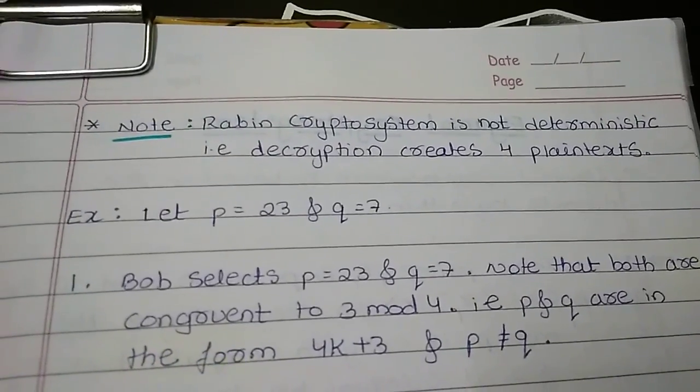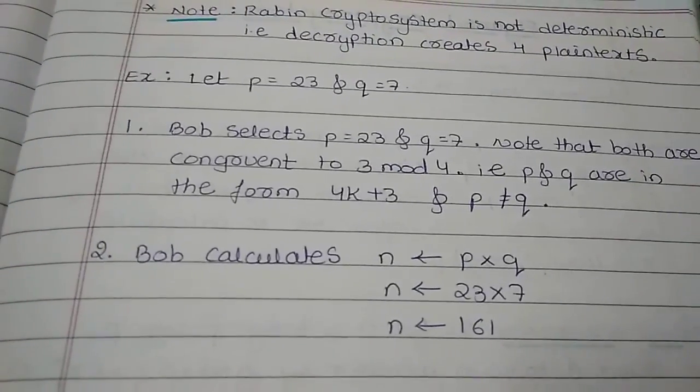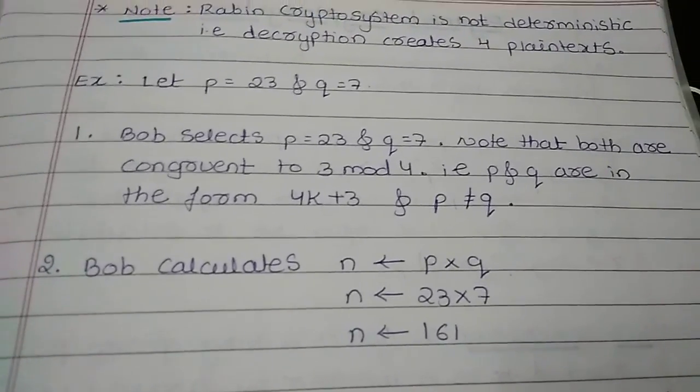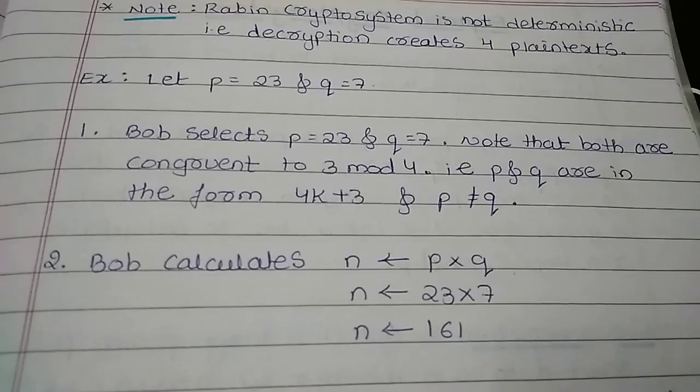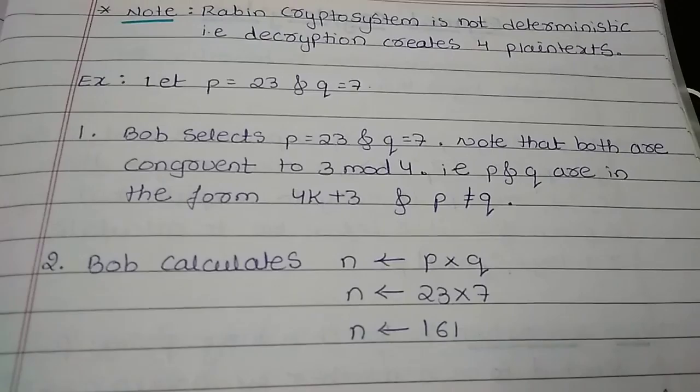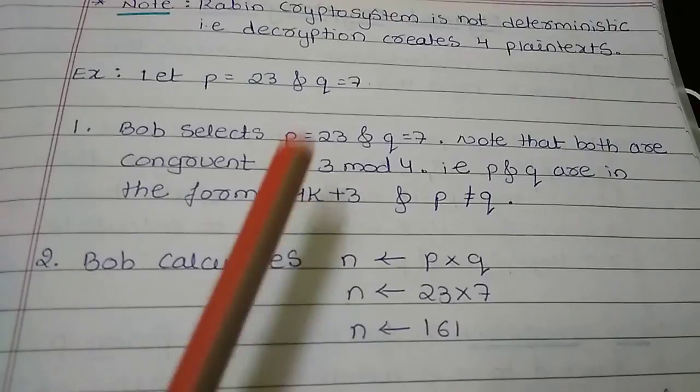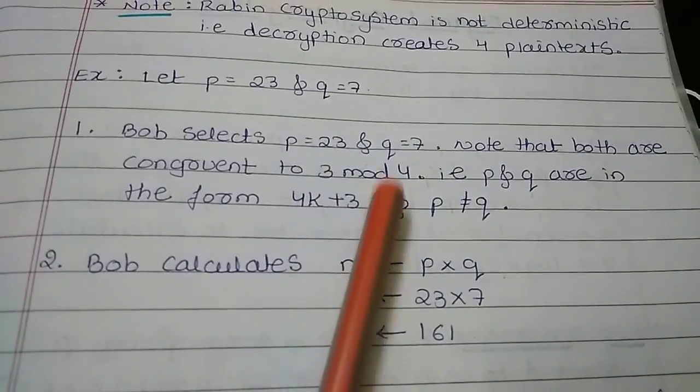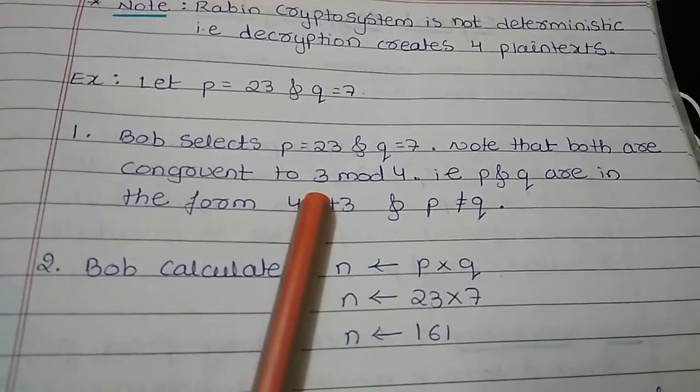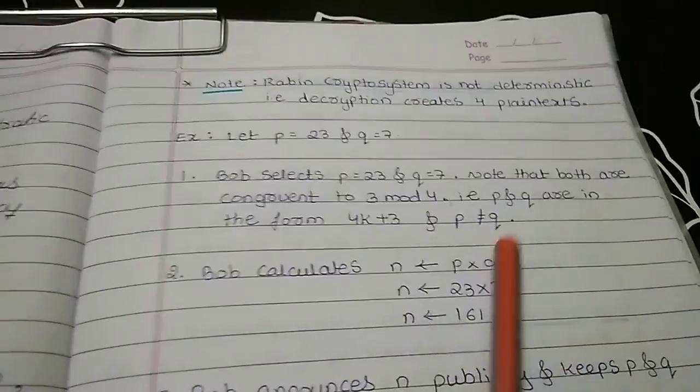To understand the concept of Rabin cryptosystem in much better way let us take the example. So here I have taken the value of P as 23 and Q as 7. Bob is the receiver who is going to select the value of P as 23 and Q as 7. Remember that both these values are congruent to 3 mod 4. That means 23 mod 4 will give you the remainder 3 and 7 mod 4 will give you the remainder 3, such that they are in the form of 4K plus 3.